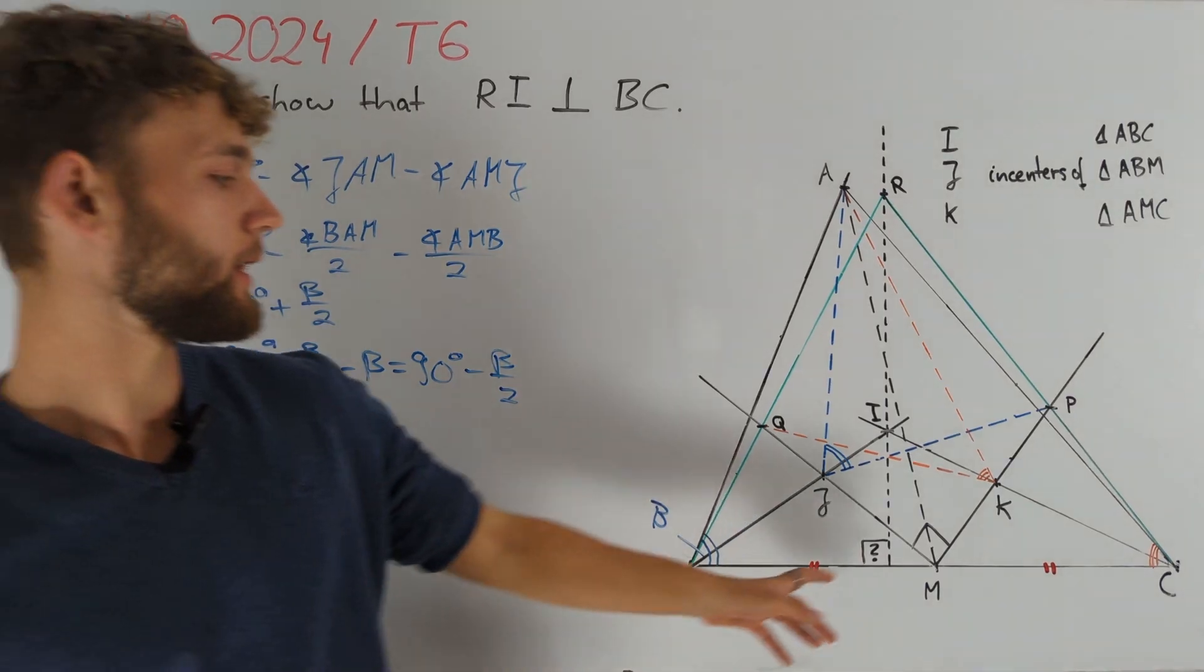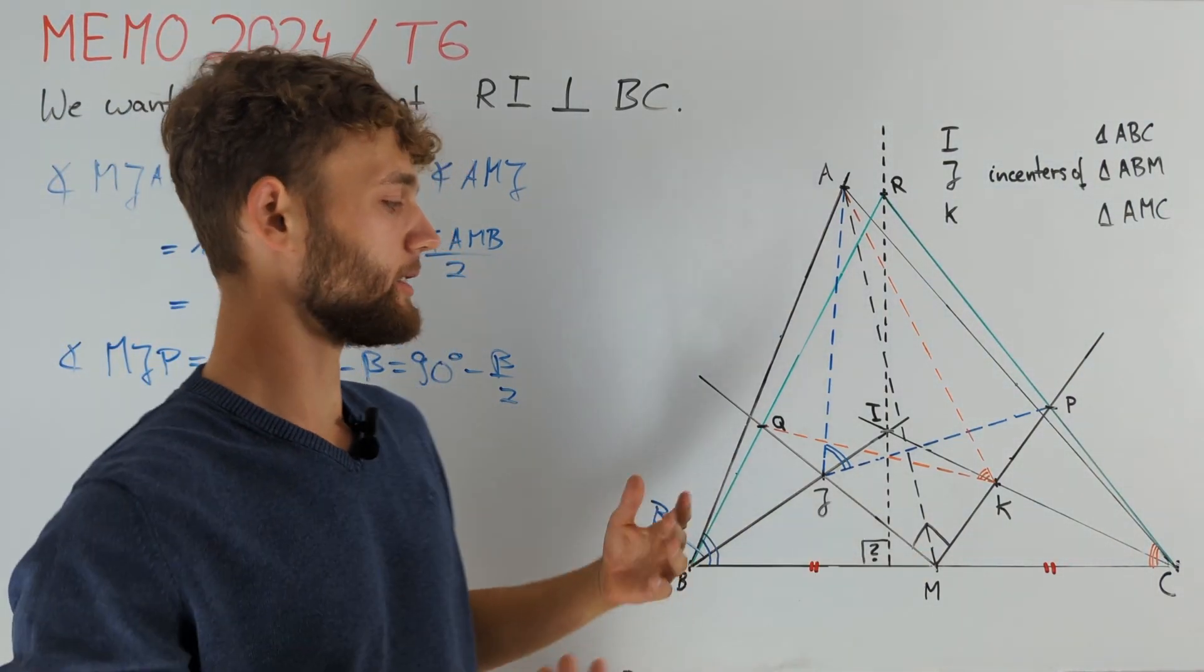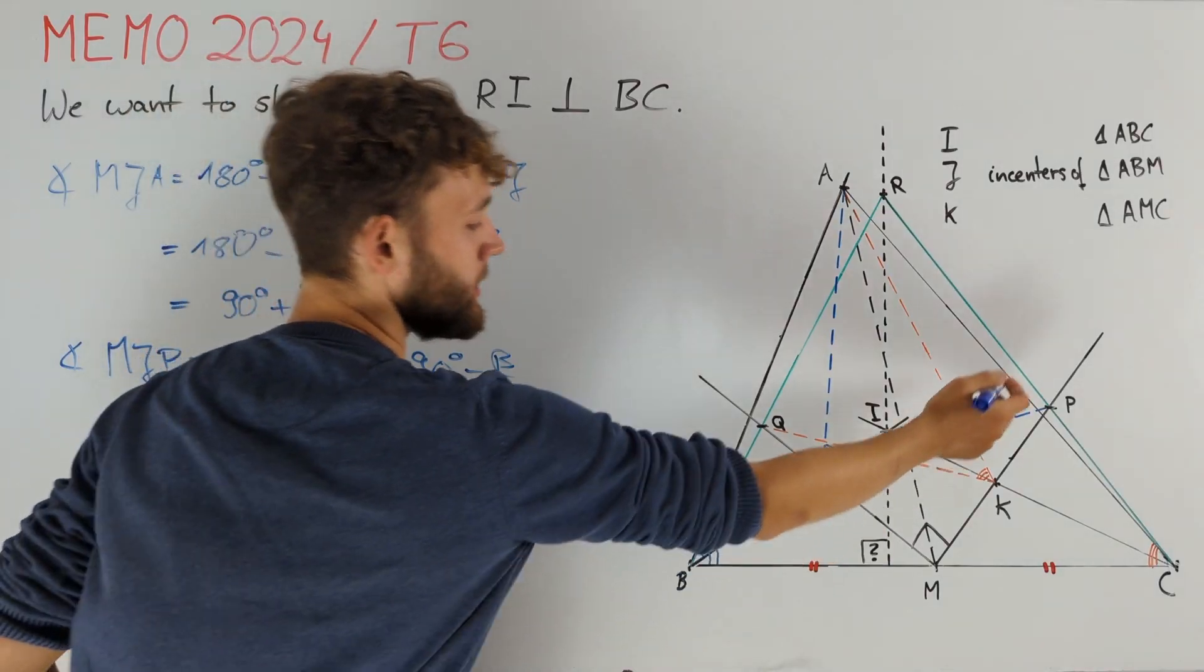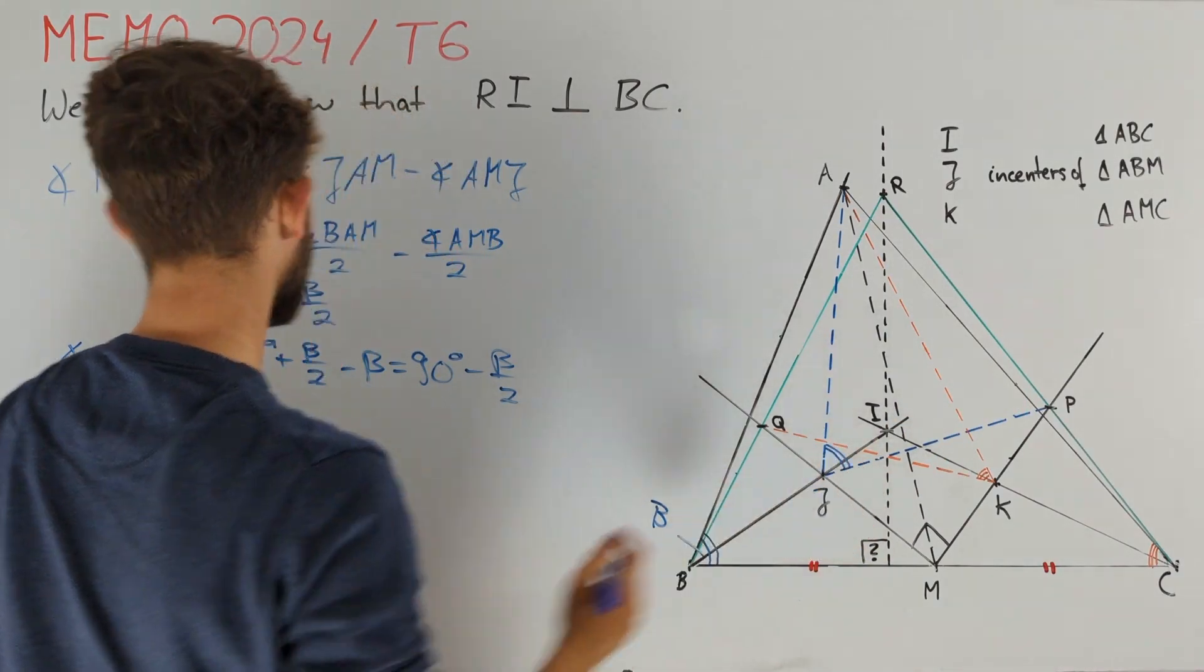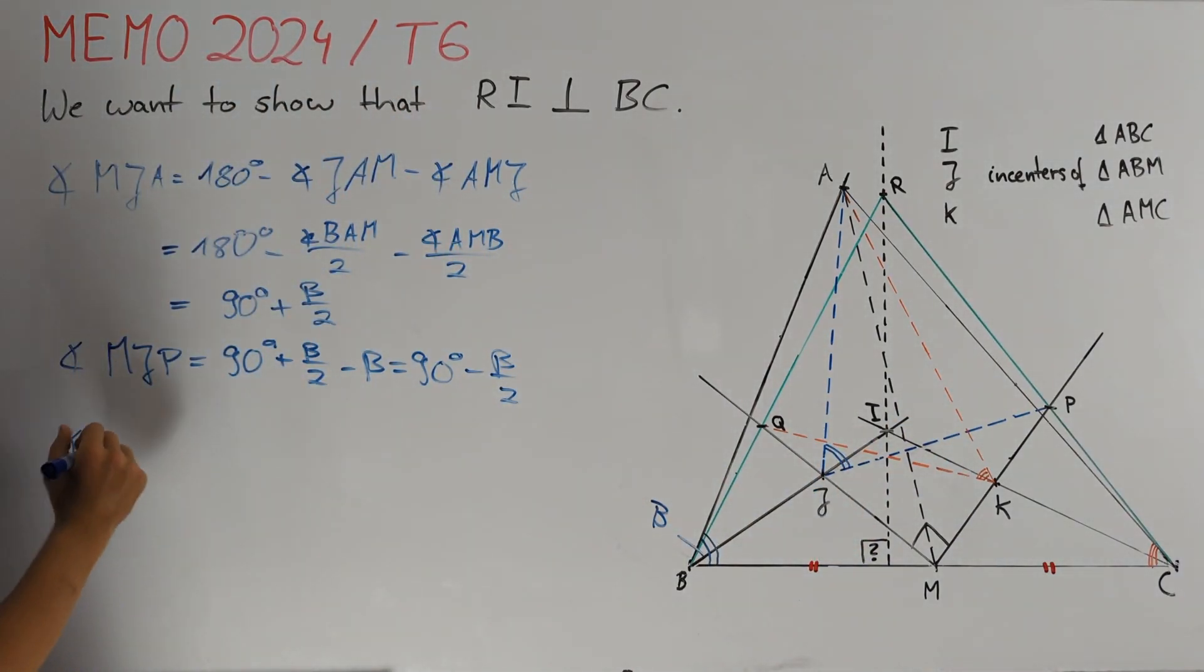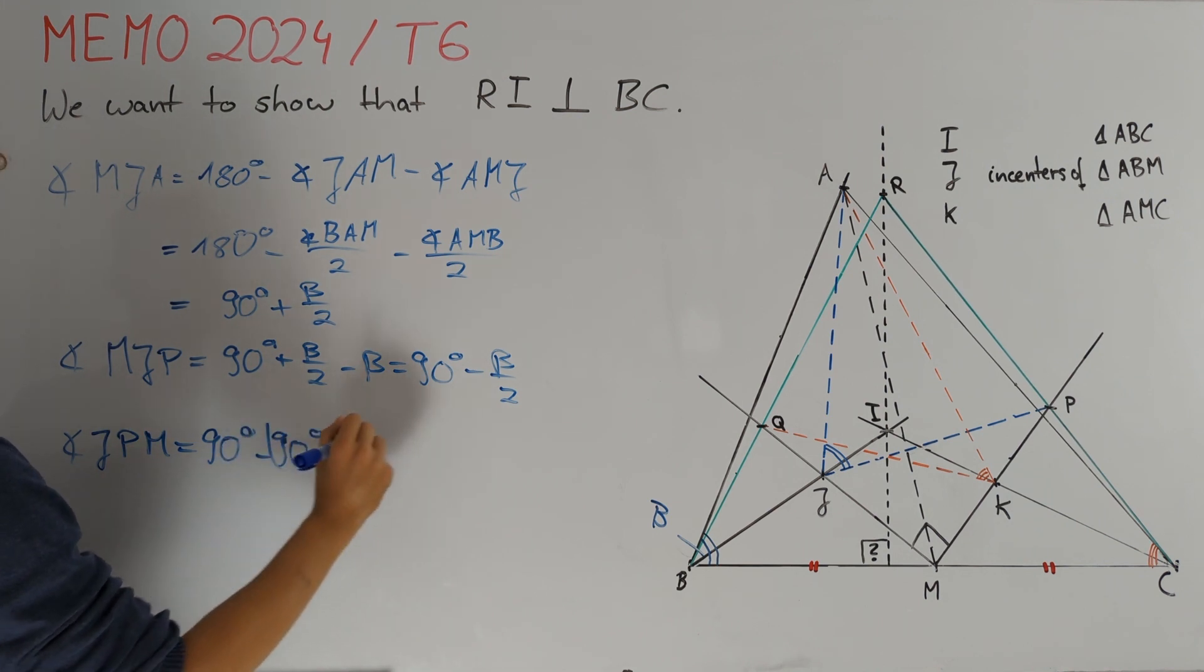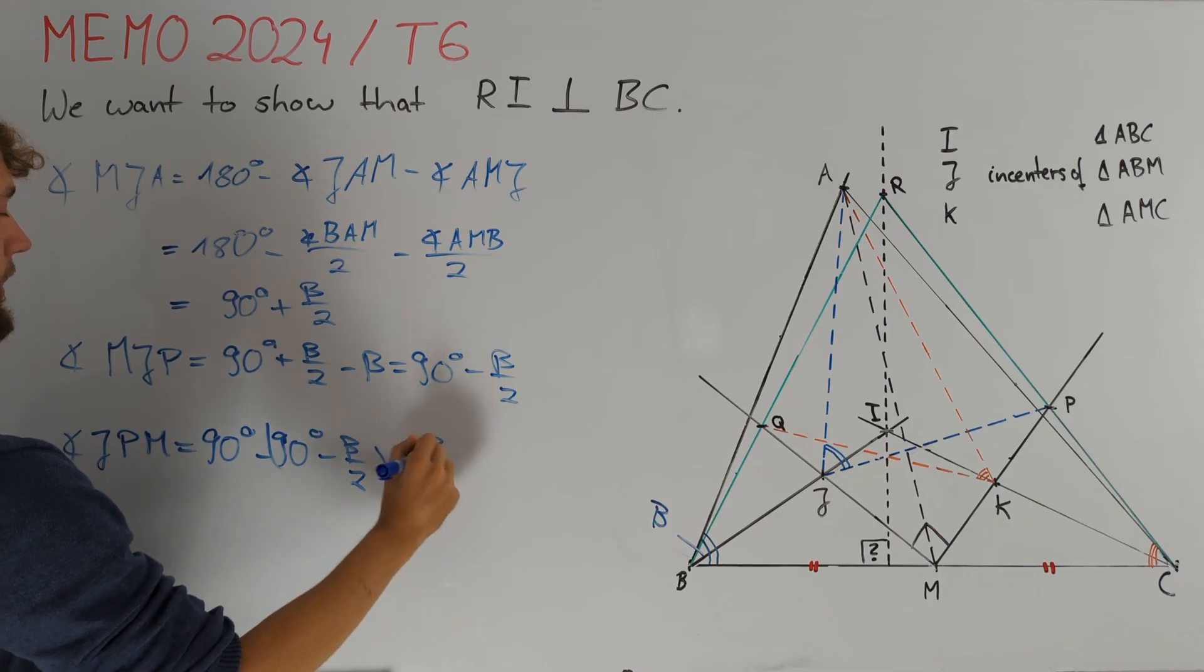Moreover, we had already figured out that angle PMJ is a right one. Therefore, we can use the fact that angle MJP equals 90 degrees minus beta over 2 to conclude that angle JPM equals 90 degrees minus 90 degrees minus beta over 2 which is nothing but beta divided by 2.